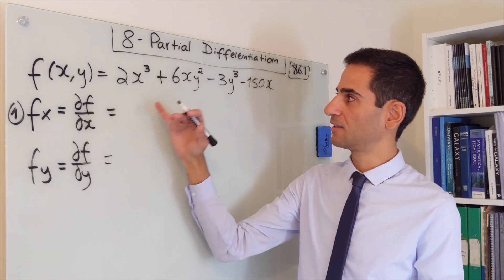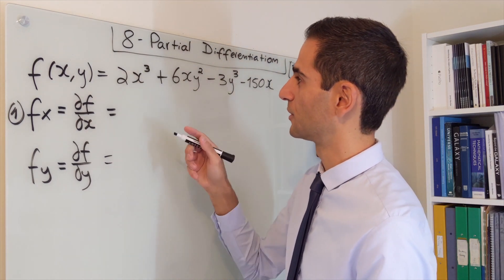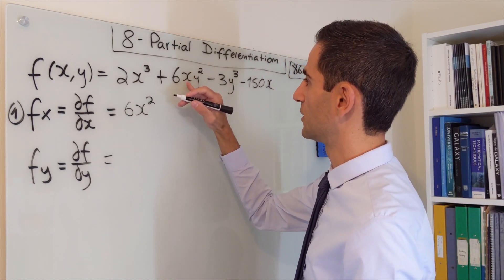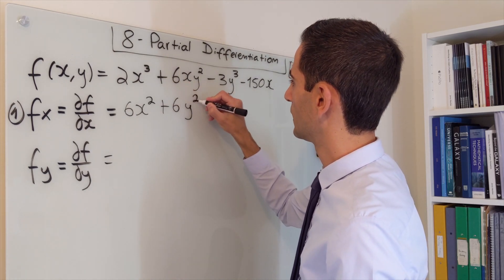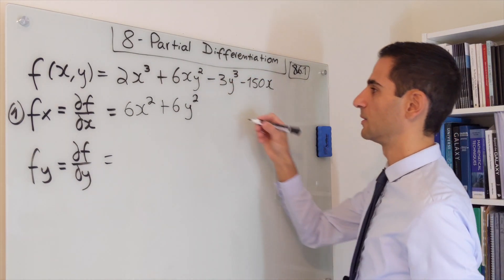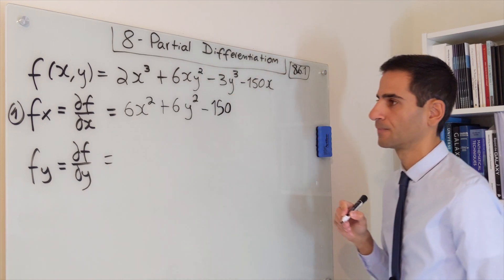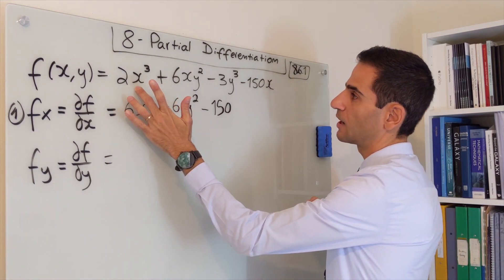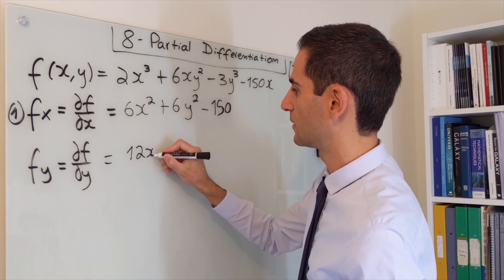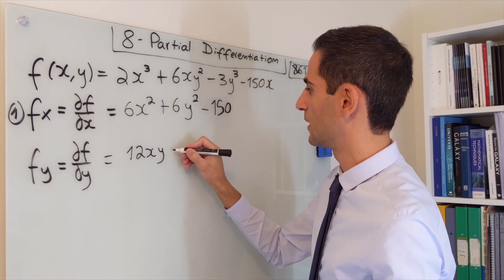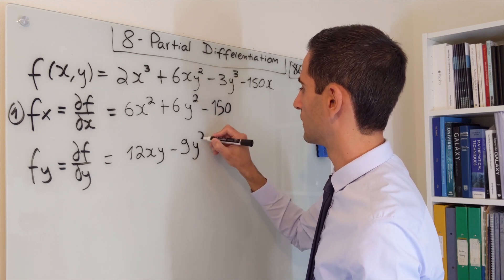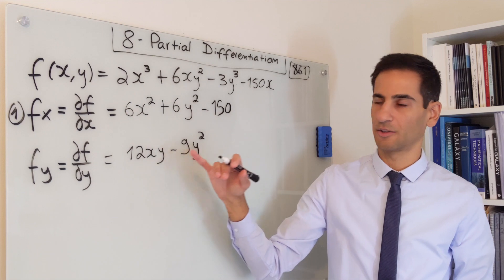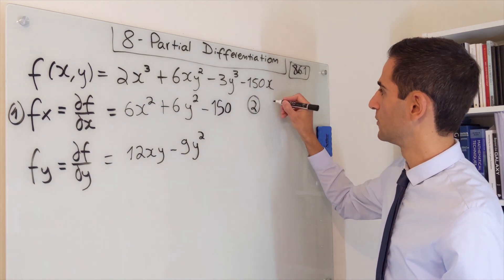Let's calculate the partial derivatives. For the partial derivative with respect to x, anything that's not an x becomes a constant, so the first term becomes 6x². The y is a constant, so the next term becomes 6y². The term with no dependence on x vanishes, and the last term becomes minus 150. For the partial derivative with respect to y: the first term has no dependence on y and drops; the next becomes 12xy; the following becomes minus 9y²; and the last has no y dependence either.